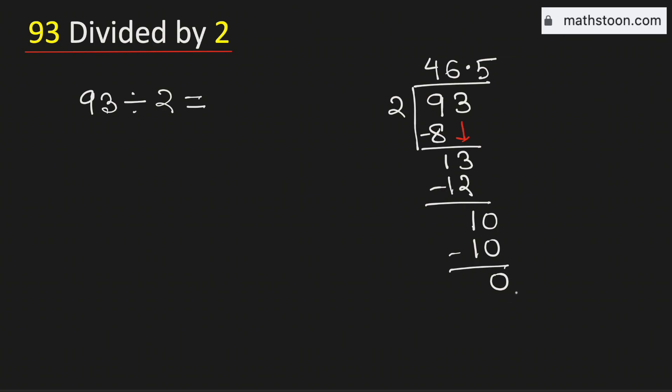As we have obtained the number 0 and there is no number to bring down here, so we will stop. Therefore, 93 divided by 2 is equal to 46.5 and this is our final answer.